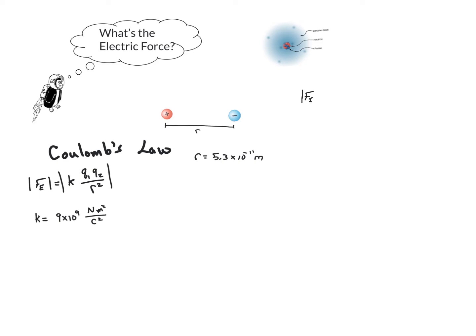So we have the magnitude, it's going to be equal to Coulomb's constant, times the charge of the proton, times the charge of the electron, all divided by the radius squared.